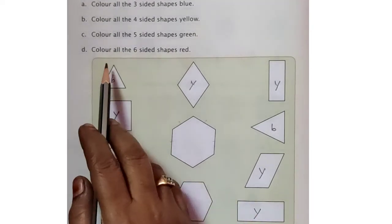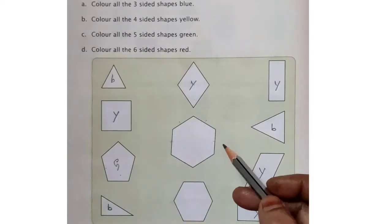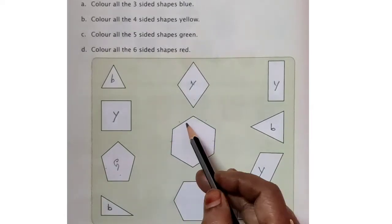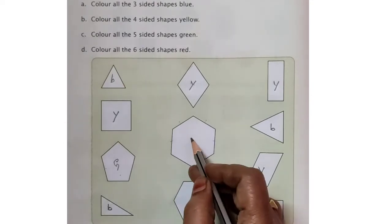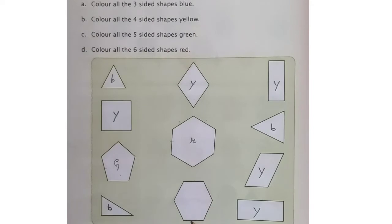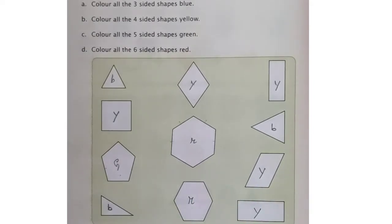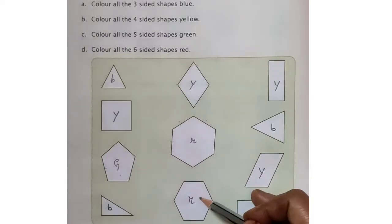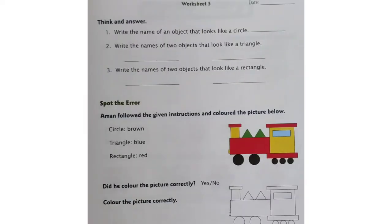Now, the last one — colour all the six-sided shapes red. See here, six sides: count 1, 2, 3, 4, 5, 6. So, we have to colour red. Here also 1, 2, 3, 4, 5, 6. We colour red for this. So, two shapes we have to colour red. All of you open page number 43, children. Write today's date.